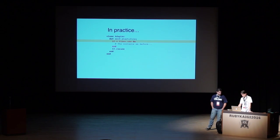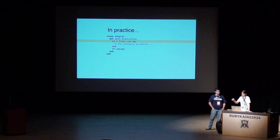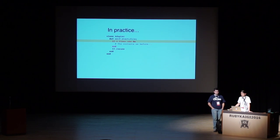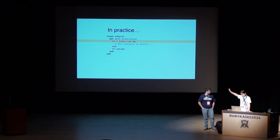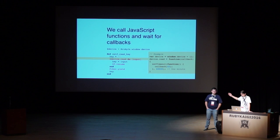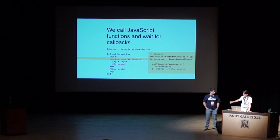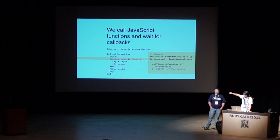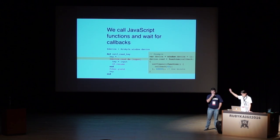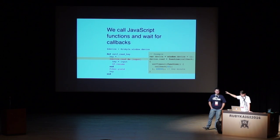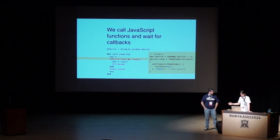That's in theory. In practice, in the case of the browser, we need to control the execution of applications. Because if you're running an application intended for a terminal in a browser, you have to be careful — browsers are not synchronous, they do many operations asynchronously. So in order to stop the current execution, we use Fiber. We have a function called read_key that reads from the keyboard. It calls a JavaScript function — device.read — and we stop the fiber with Fiber.yield. Once the JavaScript callback executes and input is received, we resume the fiber.